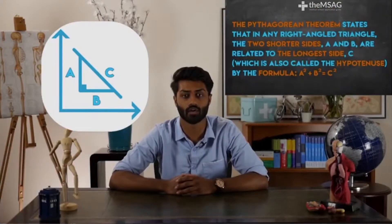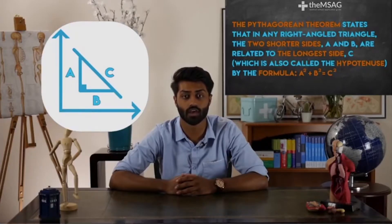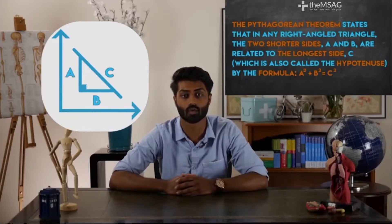What is the Pythagorean theorem again? The Pythagorean theorem states that in any right-angled triangle, the two shorter sides, a and b, are related to the longest side, c, which is also called the hypotenuse, by the formula a squared plus b squared equals c squared.